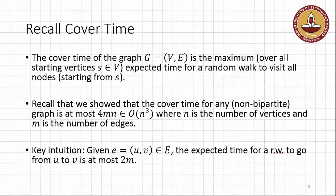Let's recall one thing that we already looked at in the lectures on random walks. We first of all defined something called the cover time. The cover time is basically the maximum over all the possible starting vertices S, so V is the set of all vertices, the expected time for a random walk to visit all nodes starting from S.